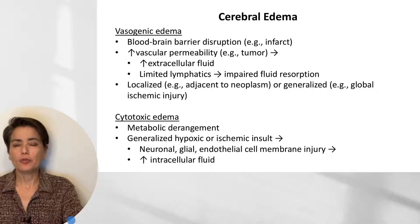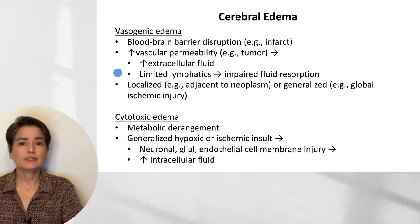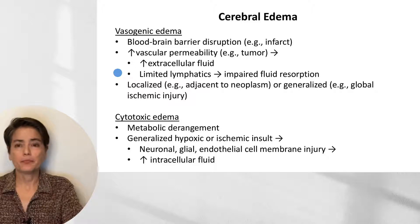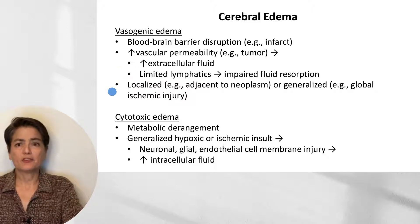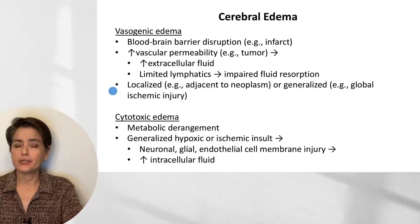Both of these are going to lead to increased extracellular fluid, and because there are limited lymphatics in the brain, we're going to have impaired fluid resorption. We can further classify this as being localized — for example, adjacent to a neoplasm — or generalized, for example, with global ischemic injury.